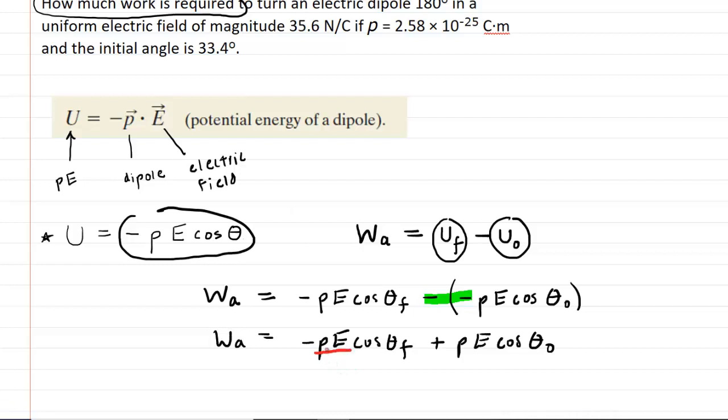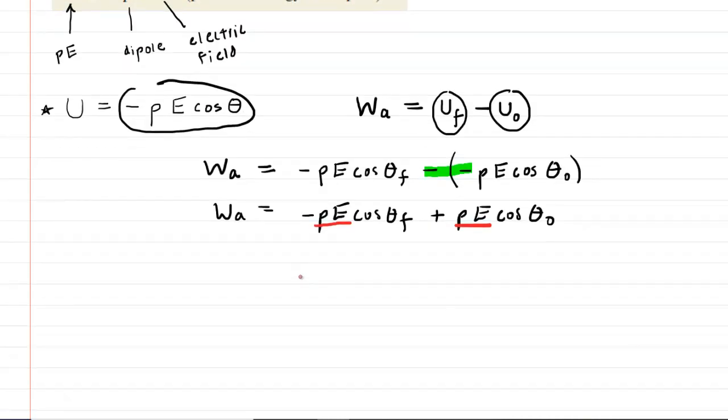Now, as noted, both the electric dipole P and the electric field E are constants, so we can actually factor those out into the front of an expression here. So we'll have P E on the outside, and then what's left over is negative cosine of the final angle plus cosine of the initial angle. Notice we kept that negative sign that was part of the leading term there.